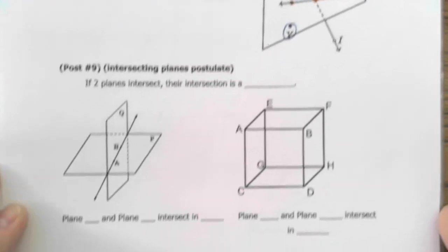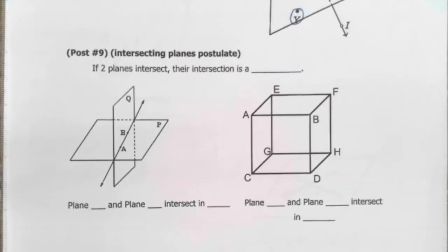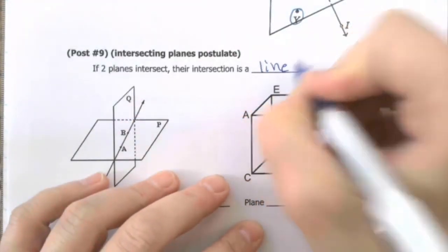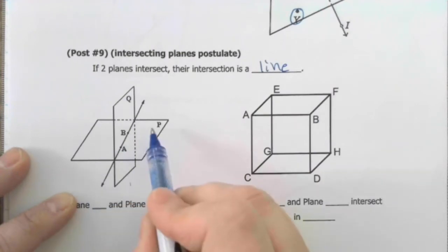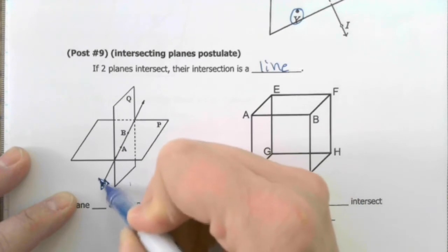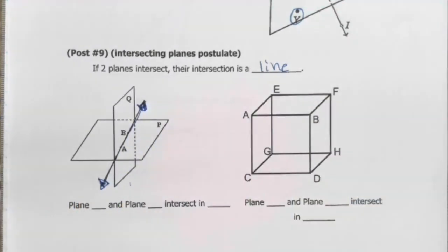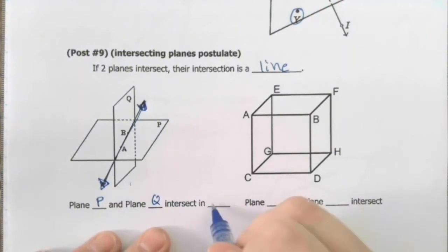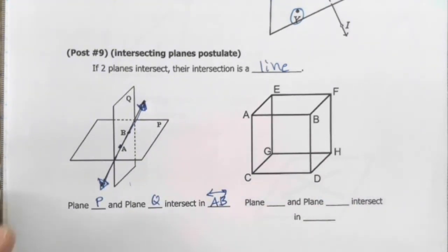All right, postulate number nine, the intersecting planes postulate. If two planes intersect, their intersection is a line. So here you have a vertical plane and a horizontal plane. And the seam where they intersect here is definitely a line. So we would say plane P, that's its name, and plane Q, that's its name, intersect in line AB, because this line has two points. Okay, so intersecting planes postulate, what about in this situation?